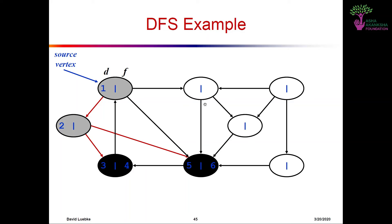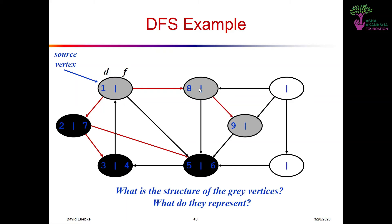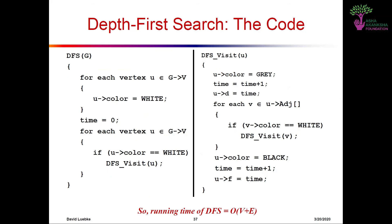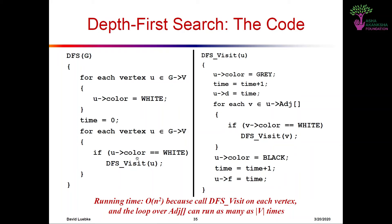Regarding the running time: you might initially think it is O(N²) because DFS-visit runs on each vertex and the loop might run V times in the worst case. But the actual answer is O(V + E), providing a much tighter bound. DFS-visit is called once per vertex. The inner loop can be attributed to an edge in the graph — it runs once per edge for a directed graph and twice for undirected. Thus the loop runs in O(E) time and the overall algorithm runs in O(V + E).